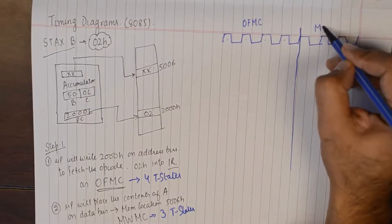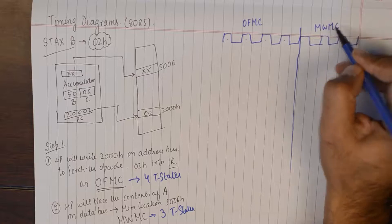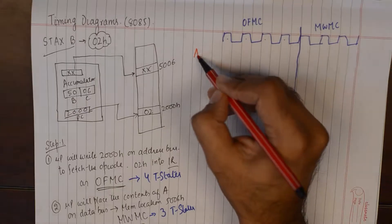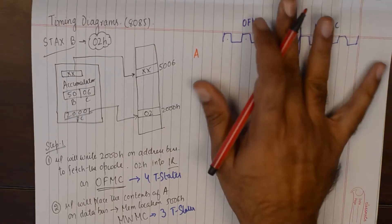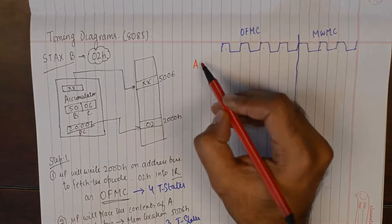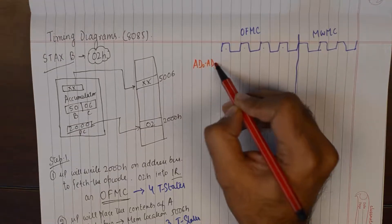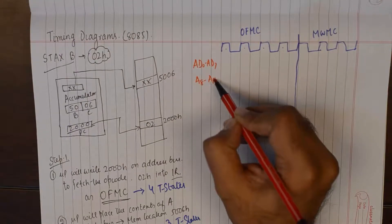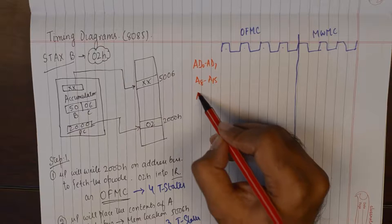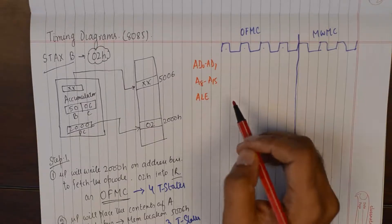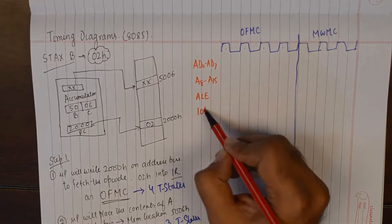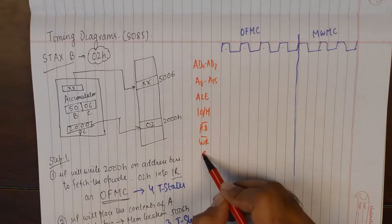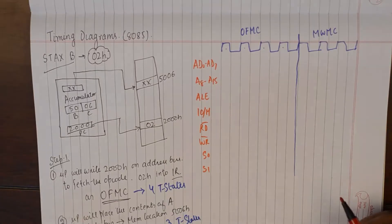The first four will represent opcode fetch machine cycle. The next three will represent memory write machine cycle. So we will try and make a timing diagram and we plan to show address lines AD0 to AD7 multiplexed with data lines. We plan to show A8 to A15. We also will be showing the status of address latch enable along with IO slash M, read, write, S0 and S1.